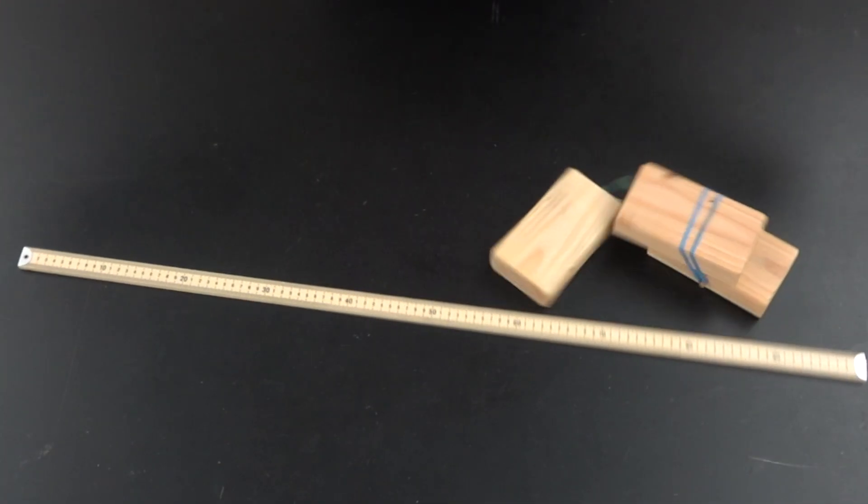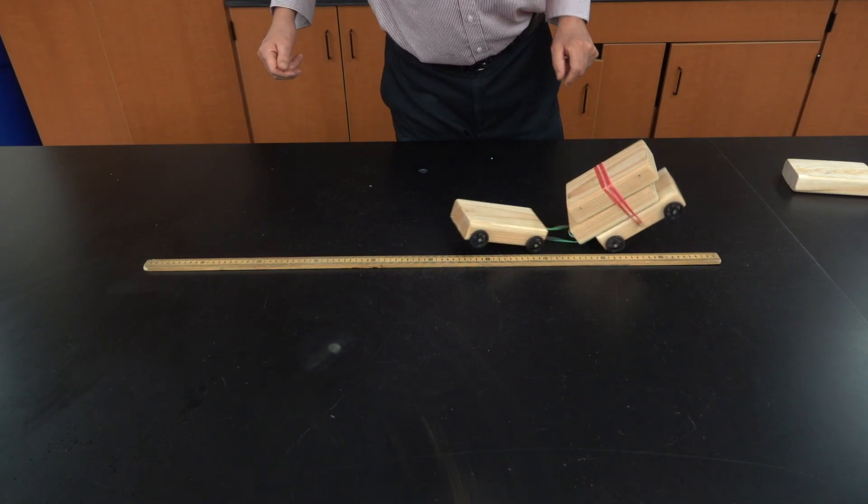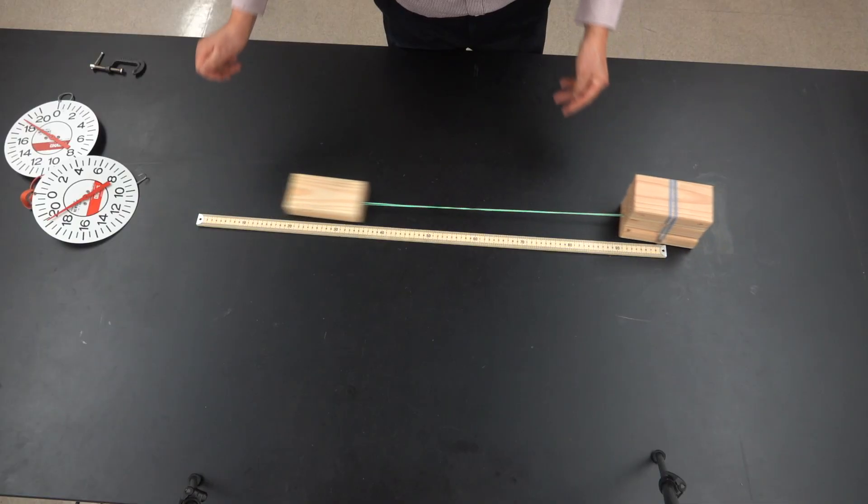With the wheels, we find the position of impact differs by about 5 centimeters. So it's not a big change in our results, but when I use the blocks without the wheels, friction is part of the discussion.